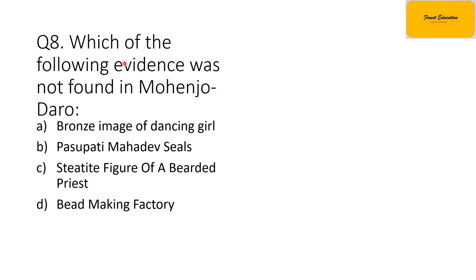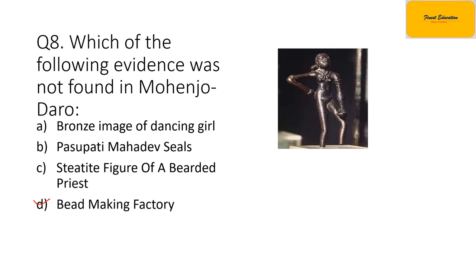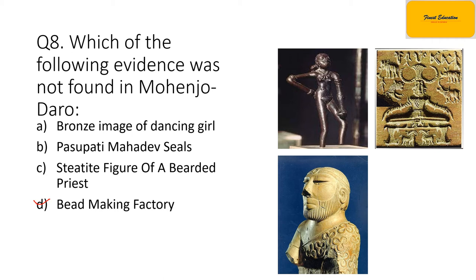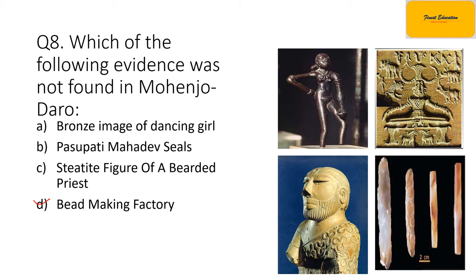The 8th question is: which of the following evidence was not found in Mohenjo-daro? The correct answer is option B. The Pashupati Mahadev seal, the stereotype figure of a bearded priest, and the Priest King are evidences found in Mohenjo-daro. However, the bead factory was found in Chanhudaro, not Mohenjo-daro.